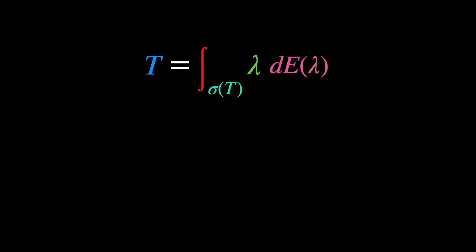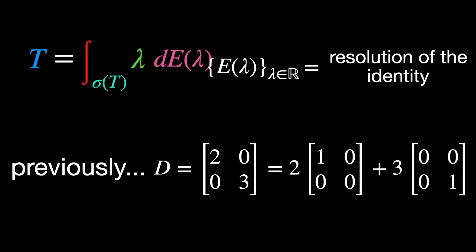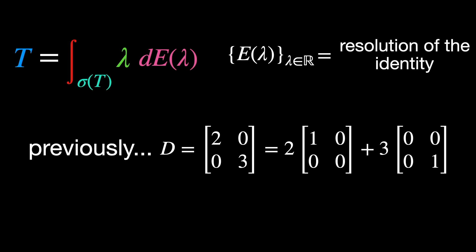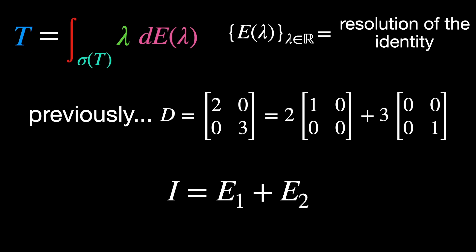E of lambda is the resolution of the identity, which tells us how the space can be continuously decomposed along spectral directions. For a previous example, when we had D as the matrix [2,0; 0,3], the resolution of the identity was I equals E1 plus E2. This was in the discrete case.